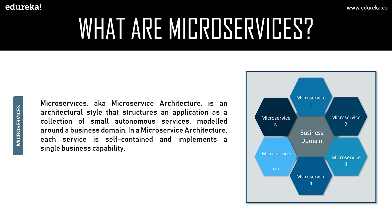For example, if you have an e-commerce application, your business domain is e-commerce, and you'll build services around its required functionalities and features. You can have any number of services based on the architecture. Before microservices came into the picture, industries were using monolithic architecture, where all the functionalities and features — front end, back end, everything — were stored in a single place.